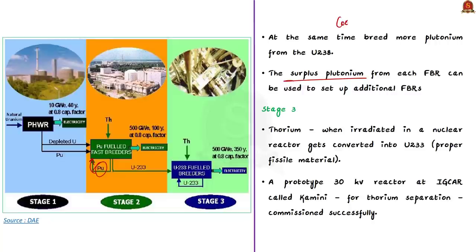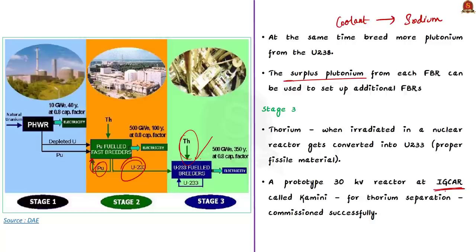The third stage uses thorium, which when irradiated in a nuclear reactor is converted into uranium-233 — a fissile material. Using thorium for power generation has already begun. The Indira Gandhi Centre for Atomic Research has commissioned a prototype 30 kW reactor for thorium separation, called KAMINI. This completes the three stages of India's nuclear program.